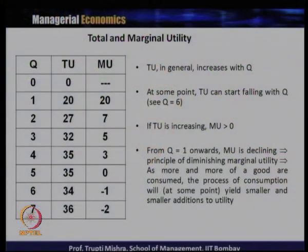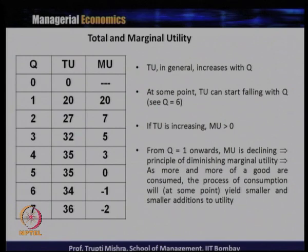We will take a numerical example of how total utility and marginal utility are related. In the first column we have Q — the total product that is getting consumed. In the second column we have total utility, and in the third column we have marginal utility.